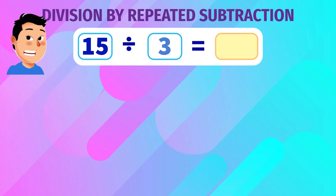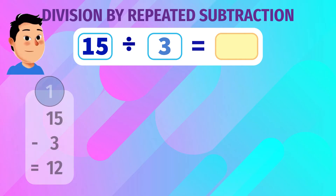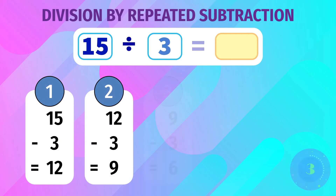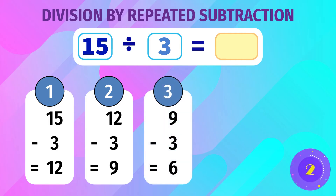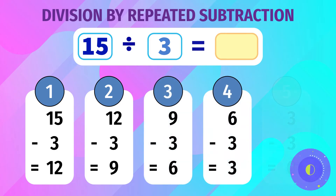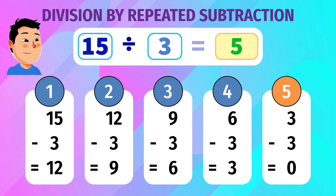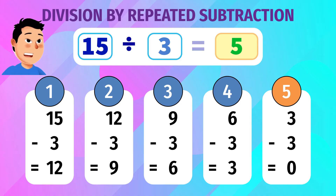Question: 15 divided by 3. Solve by repeated subtraction. Notice how you have to subtract 3, 5 times from 15 to reach zero. The answer is 5.